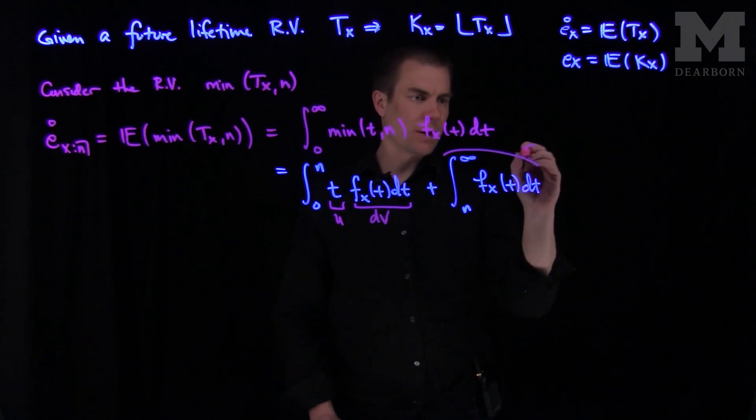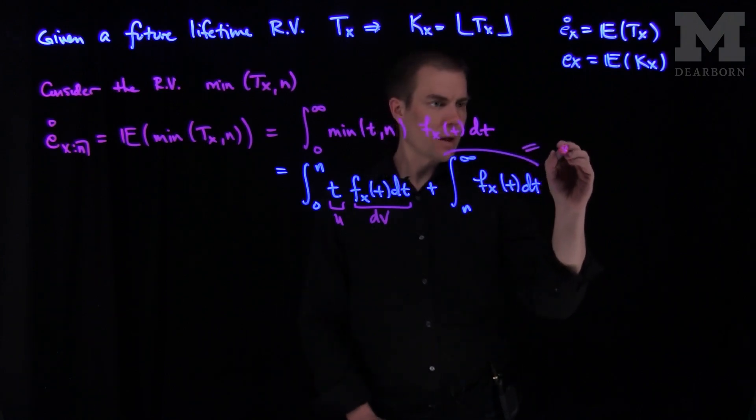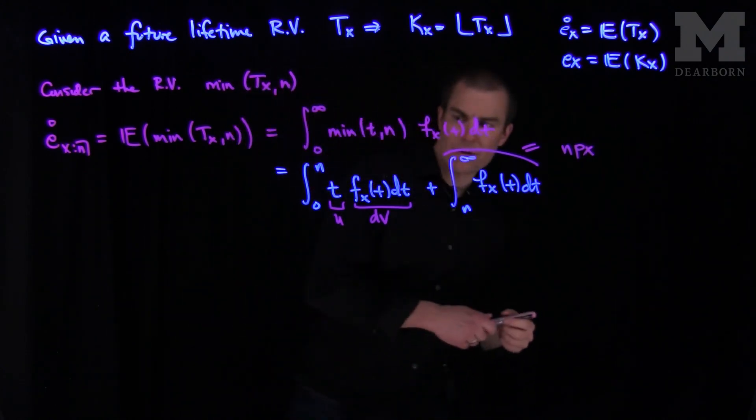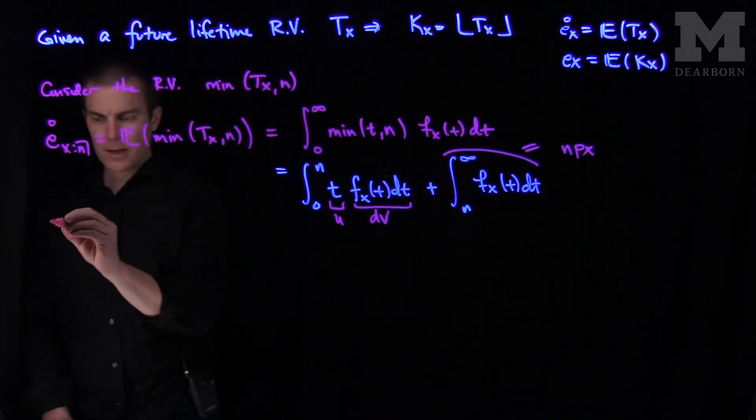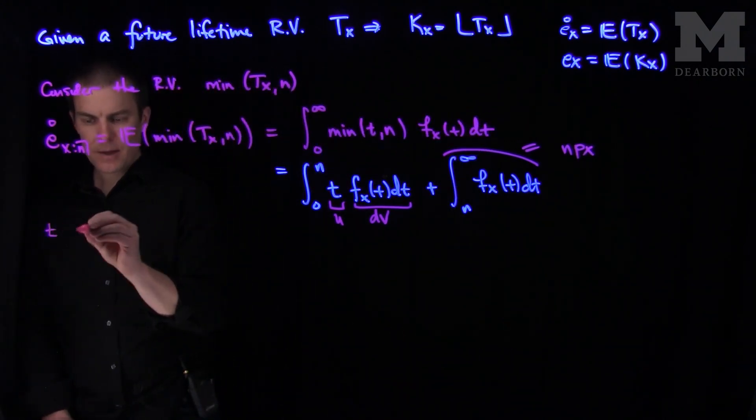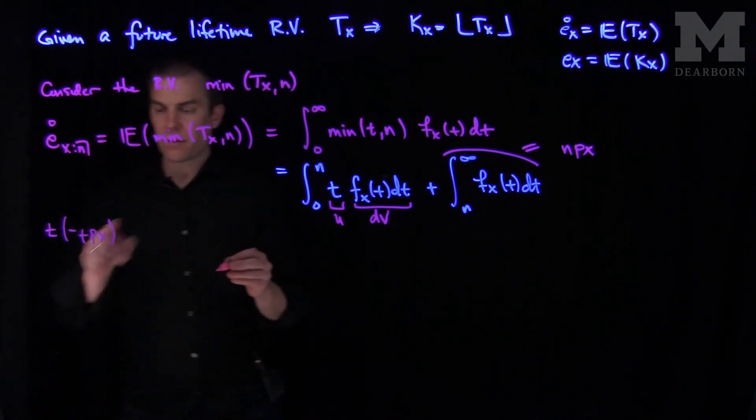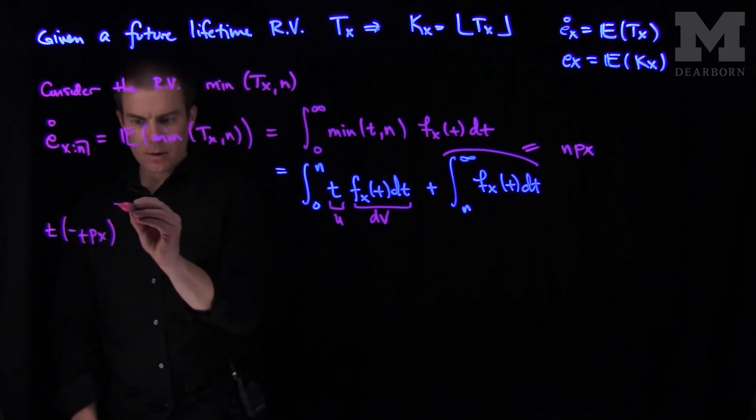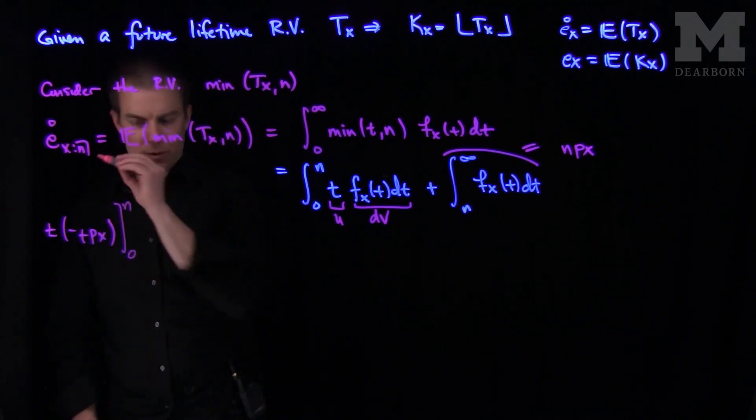We already know that this expression over here is equal to n px. And so we integrate by parts. So we're going to have a u times v. So I'm going to write that as t times negative t px, because the derivative of the survival function is negative the pdf. So if I put a negative sign there, I'll work it out.